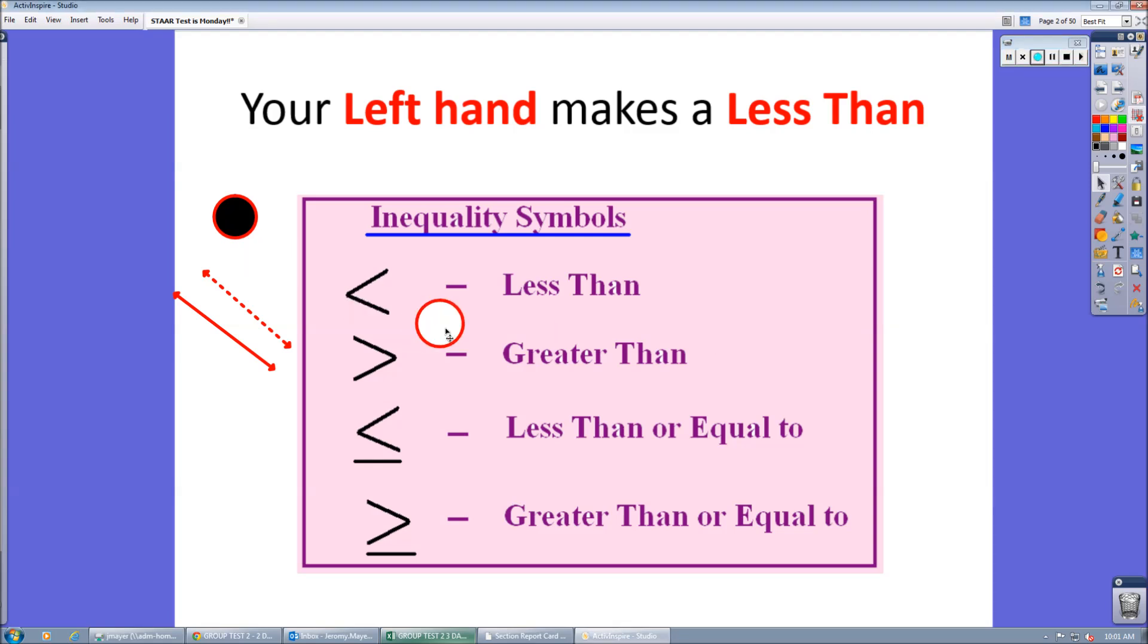Your left hand makes a less than. So less than or greater than, that's going to be the open circle. Less than or equal, greater than or equal, that's going to be the closed circle.